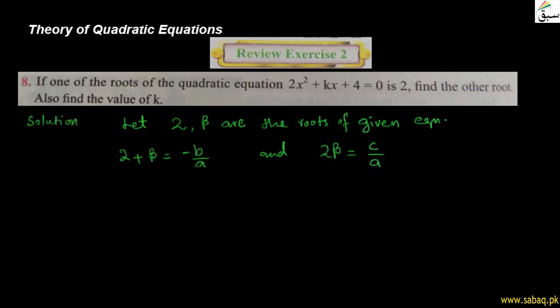اب اس equation میں a، b، c کی values: standard form ax² + bx + c = 0 سے compare کریں تو a = 2، b = k، اور c = 4 ہے۔